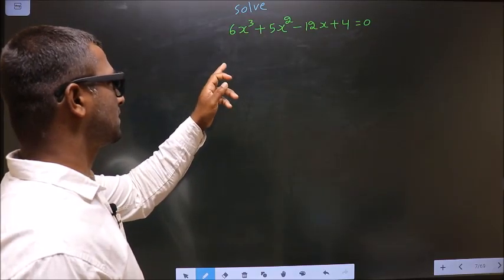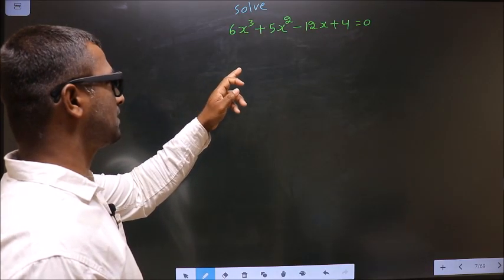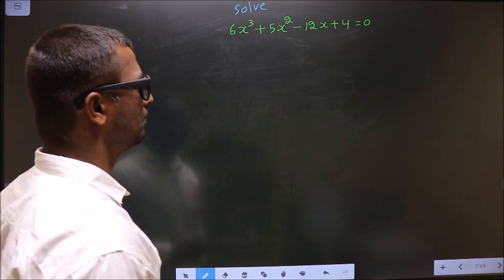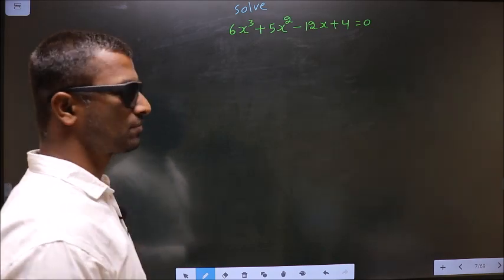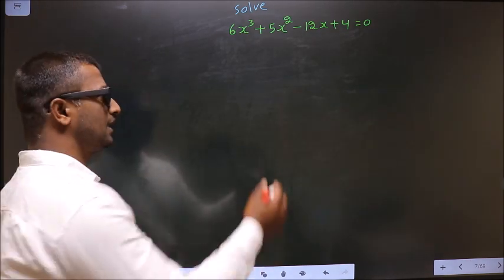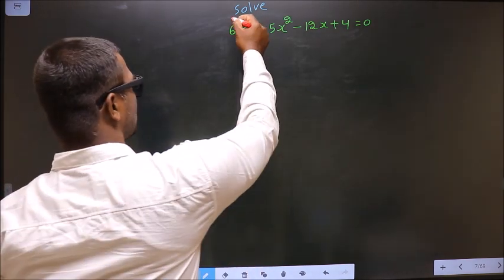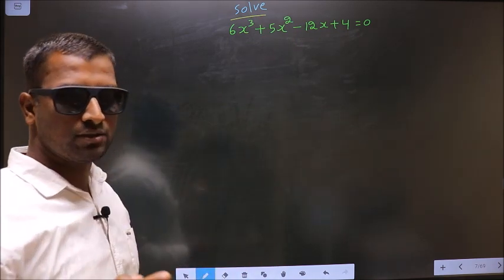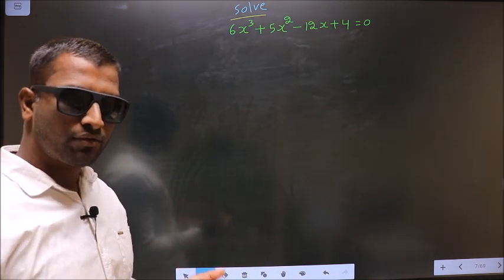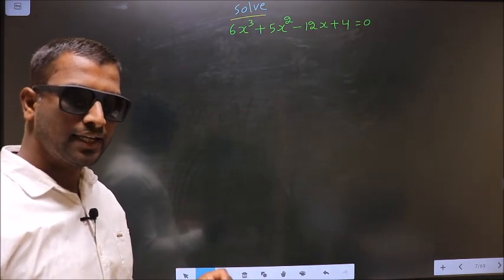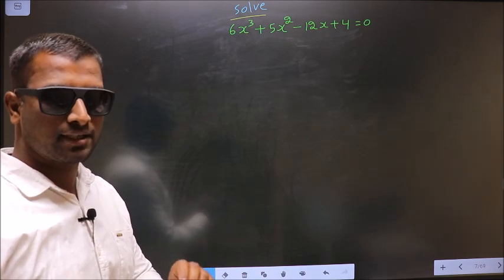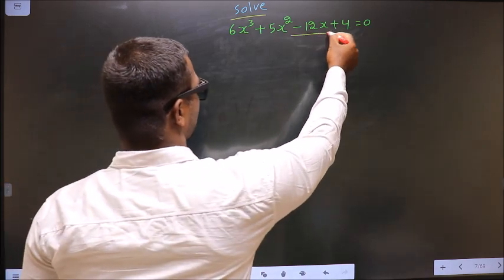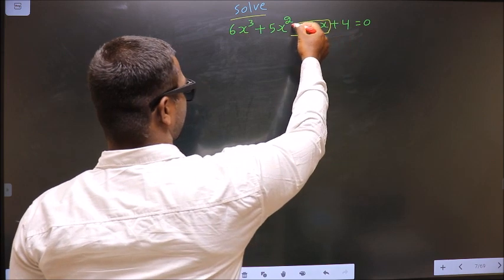Solve 6x³ + 5x² - 12x + 4 = 0. We need to find the values for x. To do that, I have to change the x term, that is minus 12x.